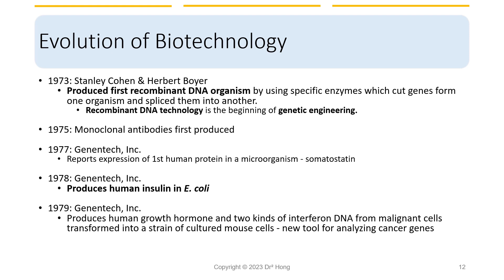Today's biotechnology corporations implement recombinant DNA technology to get bacteria to act as biological manufacturers of proteins valuable in science, medicine, and agriculture. Recombinant DNA technology has enabled new organisms for production of non-native molecules and proteins. For example, Genentech was the first to employ recombinant DNA technology in E. coli to produce human insulin in 1978.